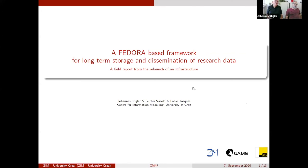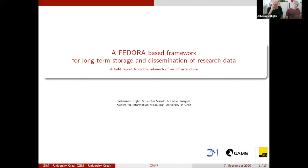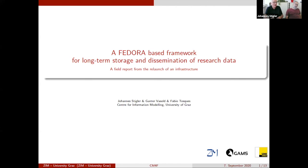Hi again everybody. My name is Johannes and Gunther is beside me. We are from the Center of Information Modeling from the University of Graz and we will give you a short report from our experience in the migration project from Fedora 3 to Fedora 4.7. We have been using Fedora for 18 years, starting with our first production system with version Fedora 2, and this is the third migration we are doing from one Fedora version to another.